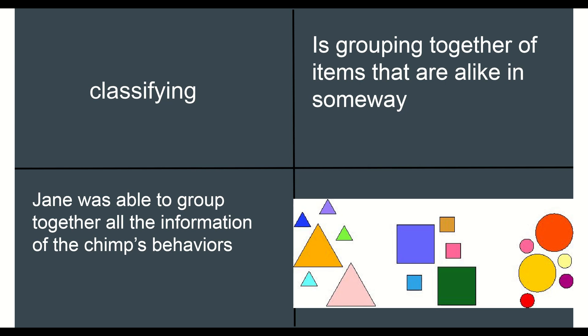Moving on to our next word, classifying. Classifying is grouping together of items that are alike in some way. Jane was able to group together all the information of the chimps' behaviors. Classifying, you can think of it as just organizing, like your binders are organized by class. I have all these shapes. These are not organized by color because there's a bunch of different colors all over the place, but they are organized by shape. I decided I wanted to classify them by shape and that was what was important to me. I could have done it by color, but maybe the shape was more important.